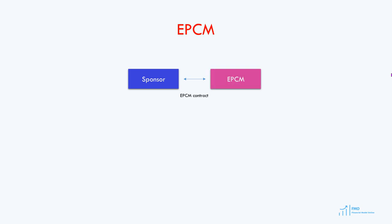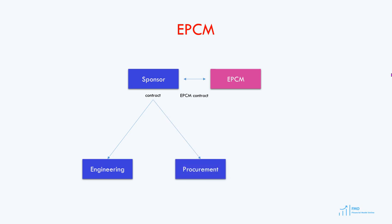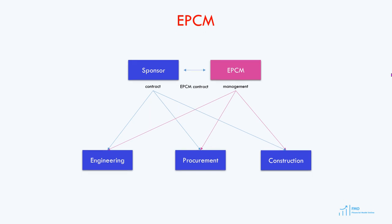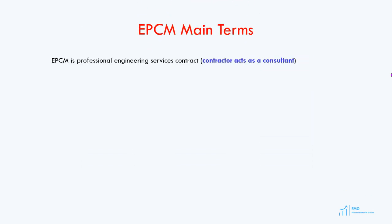Under the EPCM structure, the project company contracts the EPCM firm for engineering services, and also contracts directly with the construction company to carry out construction, and signs a supply agreement with the equipment supplier. The EPCM firm is responsible for basic and detailed design and assists the project company with procurement and construction coordination. The EPCM contract is essentially a consulting contract — this differs from the EPC contract, where the EPC firm carries out engineering, procures equipment, installs it on site, and carries out all construction activities. The main responsibility of the EPCM firm, apart from design, is to manage and coordinate equipment procurement and construction activities. Project costs in the EPCM contract are typically based on the hourly rates of employees providing engineering services.